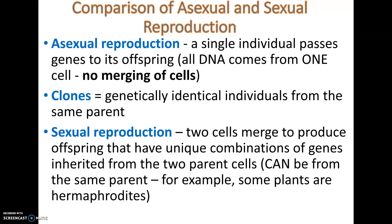Sexual reproduction involves two cells merging together, so you get an offspring with unique qualities because it has inherited half of its chromosomes from each parent. It does not necessarily require two separate parents — just two separate cells. For example, some plants are hermaphrodites where the flower produces both pollen, which is essentially sperm, and eggs. If that pollen fertilizes an egg, the plant is technically reproducing sexually because two cells are fusing together.